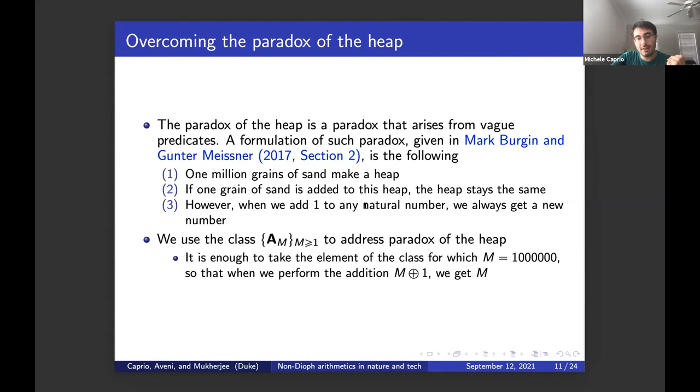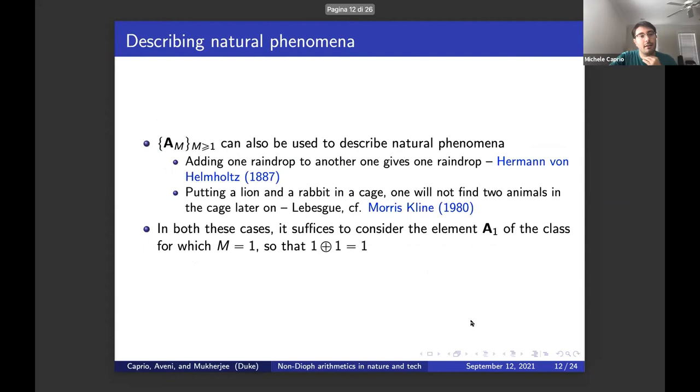However, when we add one to any natural number, we always get a new number. This is kind of the fifth Peano axiom. So this induces an inconsistency, because we are saying that a number is equal to itself, even if we add one to it. This can be easily overcome by working with the class I just presented. We just need to focus on the element for which M is equal to one million. In that case, we will have that M O plus one gets us M again. And so the paradox of the heap is solved without introducing inconsistencies.